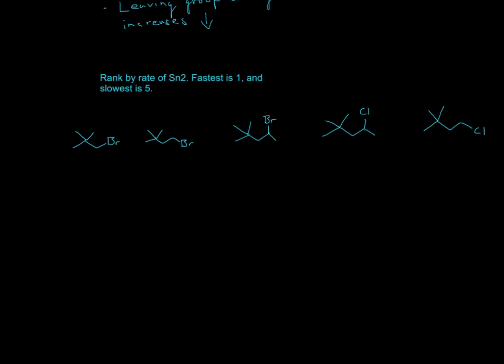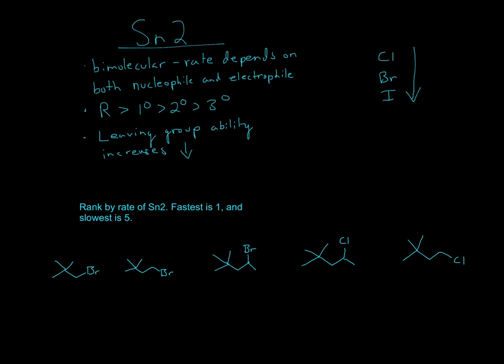Okay, so the first thing you do is just list out everything you know about SN2. So SN2 is a bimolecular reaction, rate depends on both the nucleophile and electrophile. At the site of attack, resonance is preferred, then 1°, 2°, and 3°. And leaving group ability increases as you go down a group. So you have Cl, Br, and I. So leaving group ability goes down as you go down the group. So I would be the best leaving group.